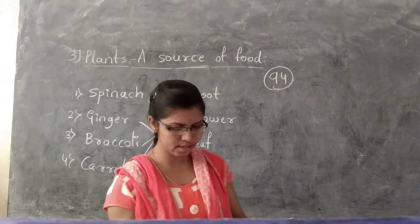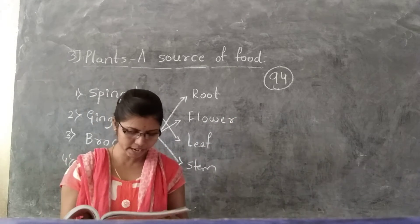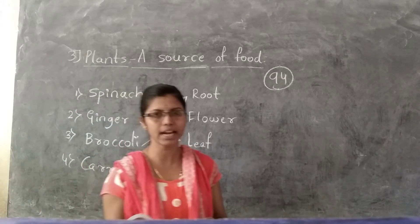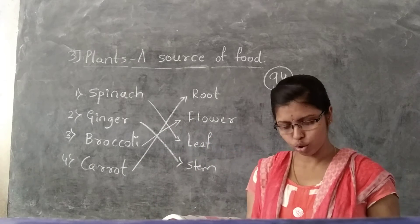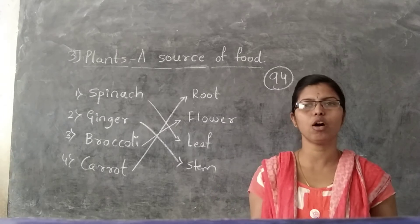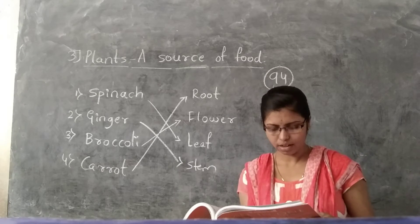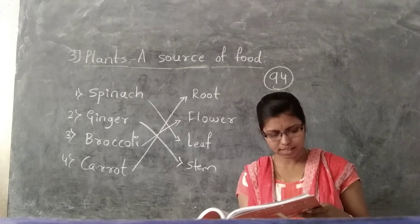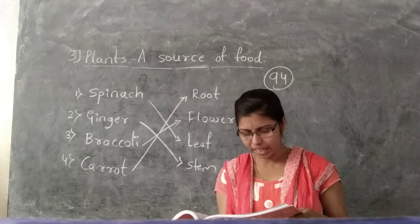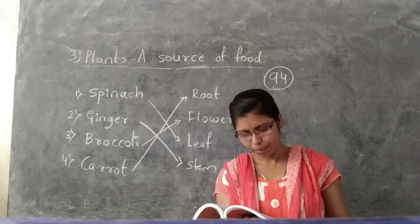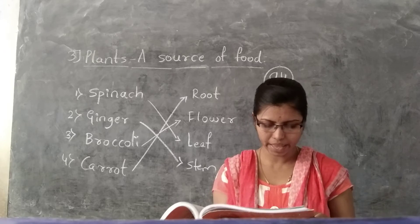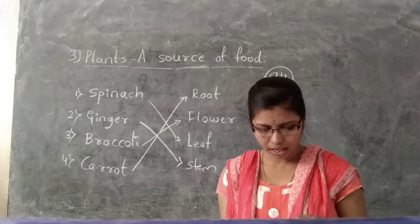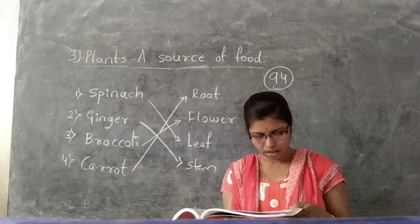Come to the next point — cereals and pulses. Some plants give us cereals and pulses. Cereals are also called food grains. Rice and maize are some cereals we eat. Pulses are the seeds of some plants that can be eaten. Gram, peas, and kidney beans are some examples of pulses.